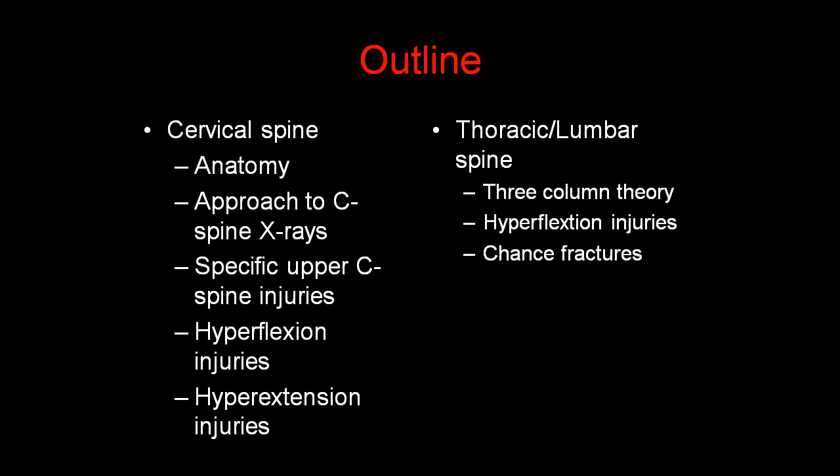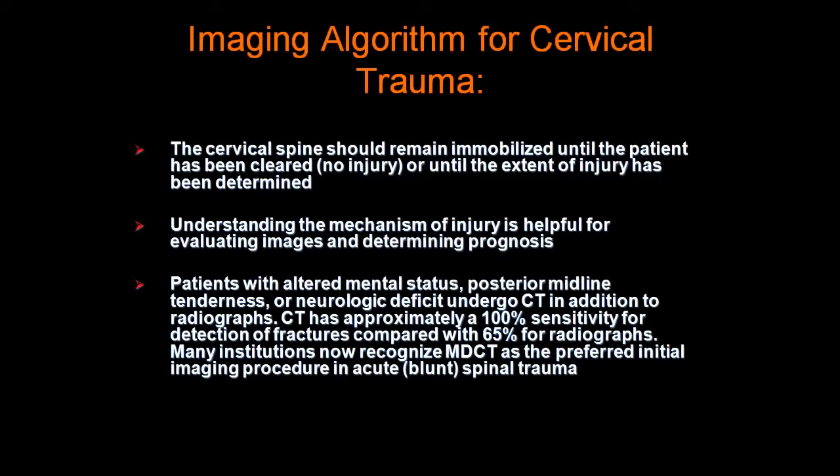For the cervical spine, we'll understand the anatomy, an approach to cervical spine x-rays, specific upper cervical spine injuries, hyperextension injuries, and hyperflexion injuries. For the thoracic and lumbar spine, we'll talk about the three-column theory, as well as hyperflexion injuries and chance fractures.